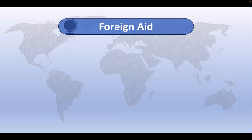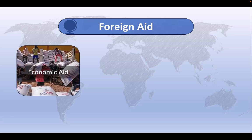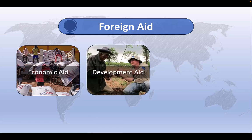Foreign aid can also be classified according to its primary purpose, though it's important to note that there can be overlap between the various categories here. At the broadest level, economic aid attempts to support the economic development and growth of recipient countries. It can take the form of grants, loans, or technical assistance, and may be used to provide for infrastructure development, poverty reduction programs, capacity building, trade promotion, or investment in key sectors like agriculture, education, health care, or energy. Development aid, sometimes called official development assistance or ODA, might be thought of as a specific kind of economic aid. It seeks to foster the long-term sustainable development of recipient countries by addressing systemic challenges and promoting social, economic, and political progress.